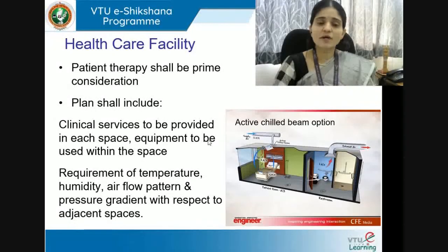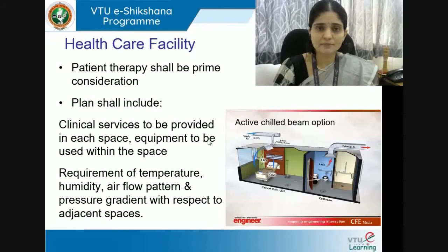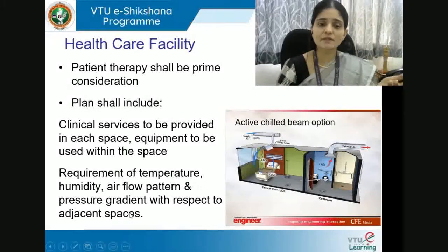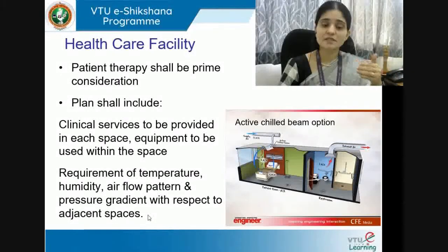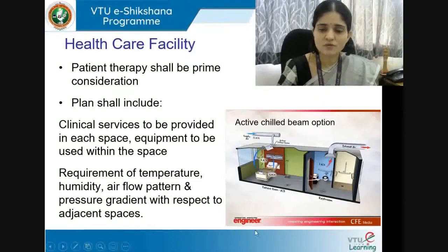Secondly, the requirements of temperature, humidity, airflow pattern, and pressure gradient with respect to adjacent spaces must be determined. We can have two types of pressure — positive and negative — and knowing where to operate each and at what degree is essential. Air changes per hour must be decided for each space, along with temperature and humidity, which are the major criteria of air conditioning. Looking at the airflow pattern and ventilation aspect, there are various options such as the active chilled beam option sourced from service providers.